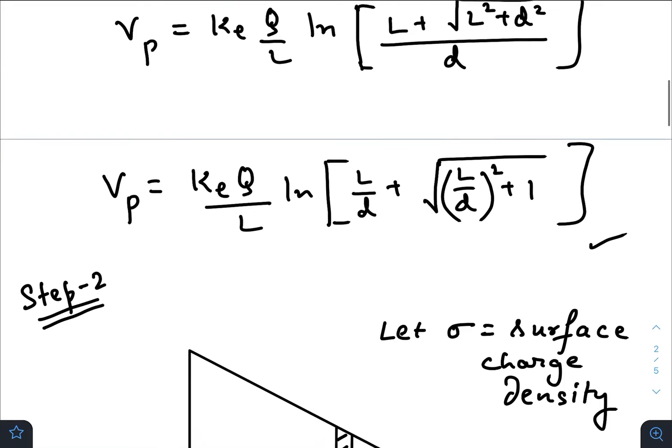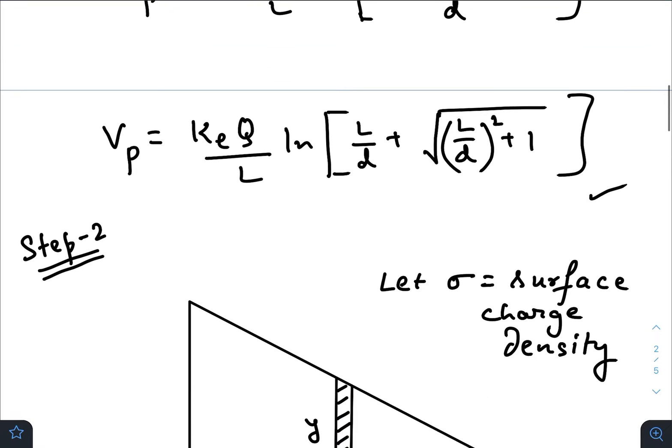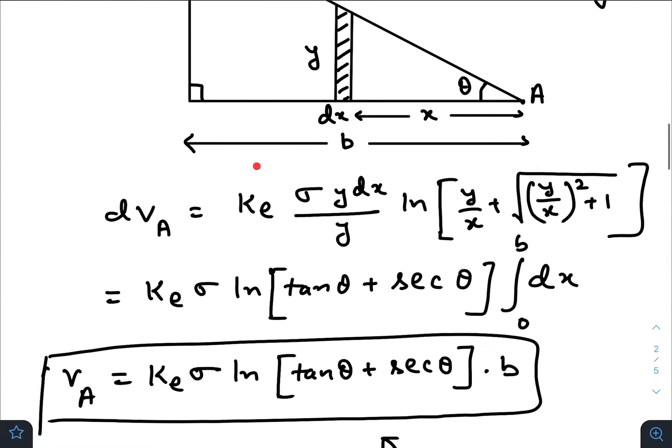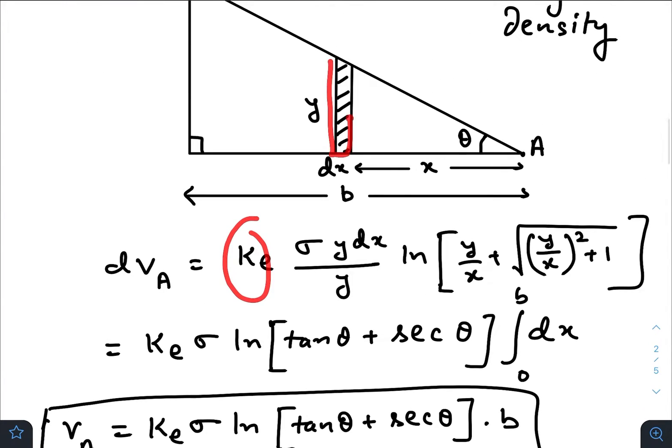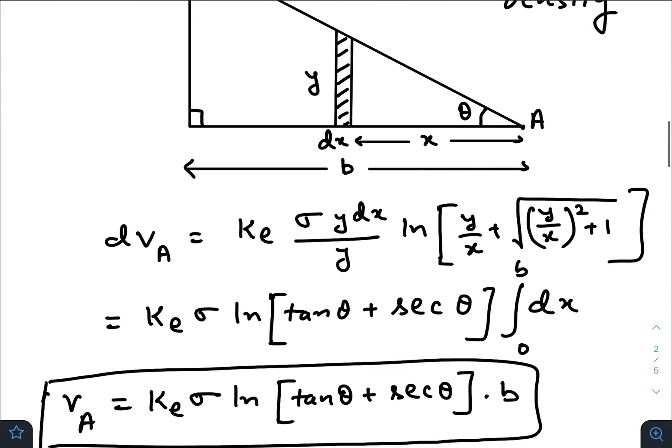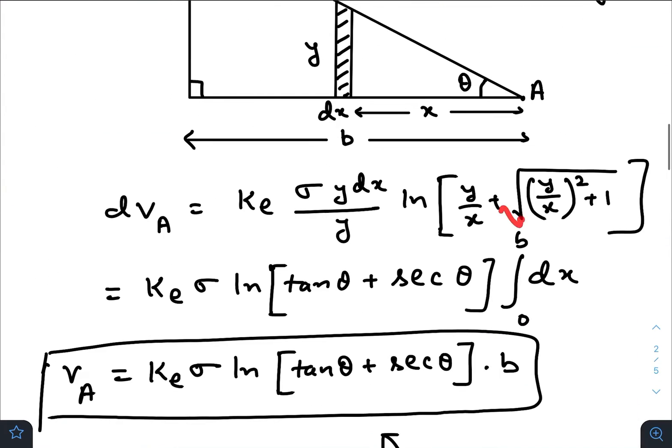Remember this formula—we will use this one. This is nothing but a rod, and for a rod, this one is our required working formula. So k_e times total charge by length: k_e times total charge of this strip, that is sigma times y dx, by length. Length of the rod divided by perpendicular distance, that is length of the rod divided by x times root over y by x whole squared plus 1.